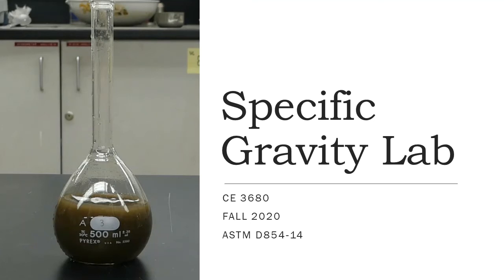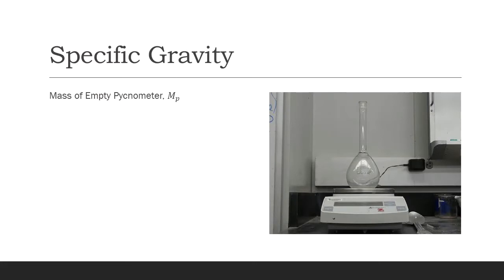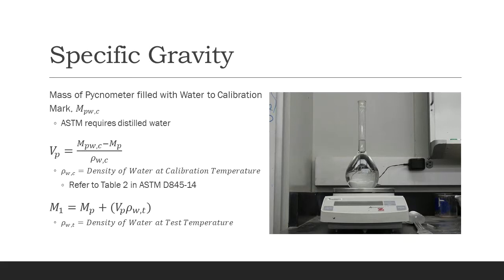In this video, we'll be going over the specific gravity lab. In this lab, we first weigh an empty pycnometer, then fill it to the calibration mark with distilled water. Take a temperature reading and record the mass. Empty the water and dry the pycnometer.